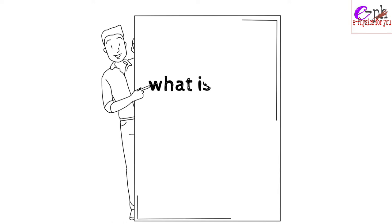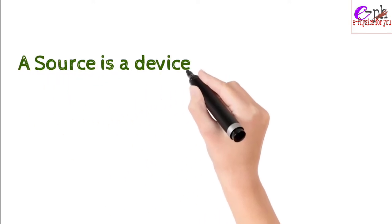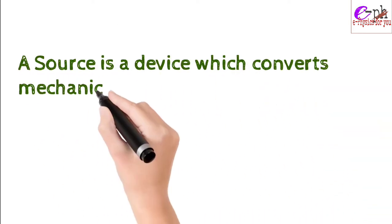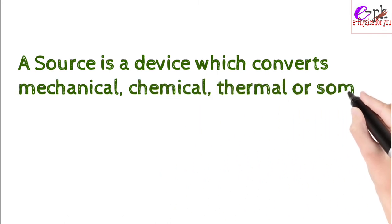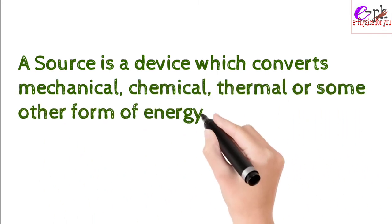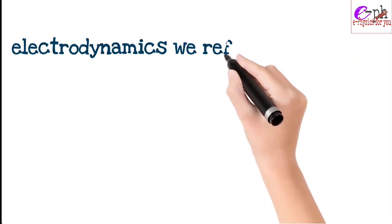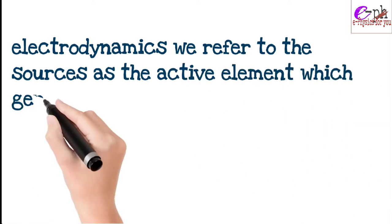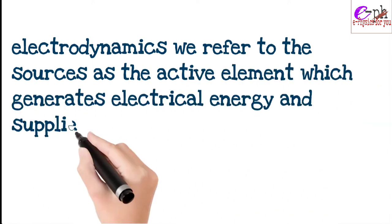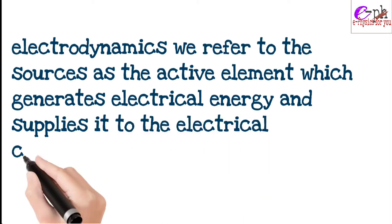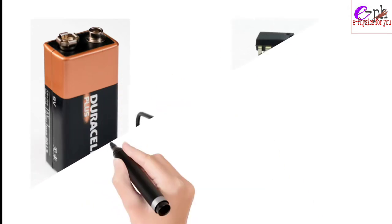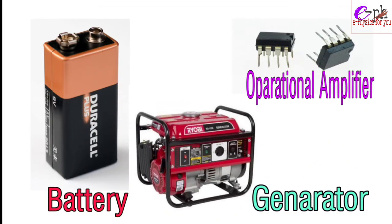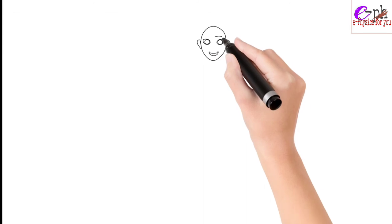A source is a device which converts mechanical, chemical, thermal, or some other form of energy into electrical energy. In electrodynamics, we refer to sources as the active element which generates electrical energy and supplies it to the electrical circuit, such as a battery, generator, operational amplifier, etc.